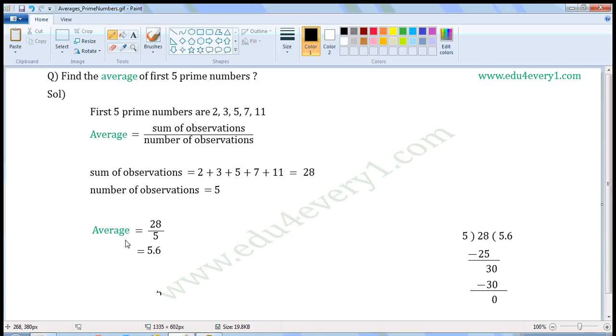Then, average is equal to 28 by 5. When 28 is divided by 5, we get 5.6 as quotient and 0 as remainder.